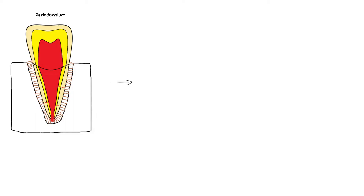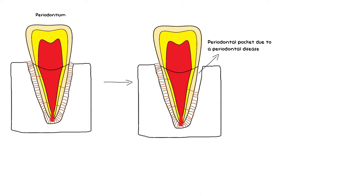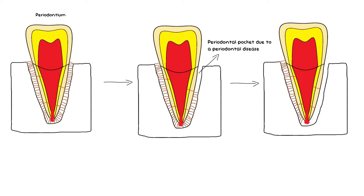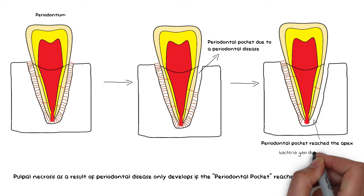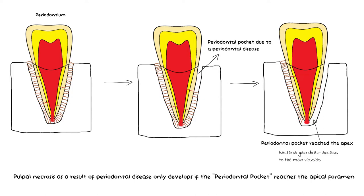Apart from common exposure of the pulp already discussed, there are also some indirect exposures of the pulp, though these are very rare. The pulp may also get infected because of periodontal disease. In these cases, bacteria can reach the pulp from lateral canals or tubules, but as long as the pulp is vital, outward movement of dentinal fluid is enough to keep bacteria away. Pulpal necrosis as a result of periodontal disease only develops if the periodontal pocket reaches the apical foramen. A periodontal pocket is a gap between the tooth and the gingiva formed as a result of long-standing conditions such as periodontitis. If ignored, the pocket deepens, eventually reaching the apical foramen, after which bacteria can gain direct access to the nerves and blood vessels of the pulp, causing pulpal death and infection of the root canal system.